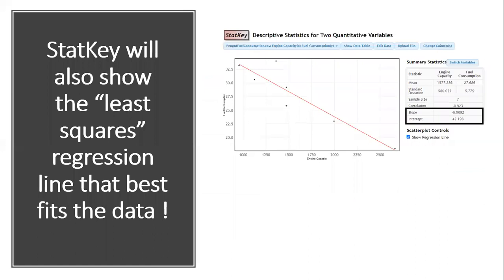Now, StatKey will also, in addition to showing us the correlation that exists between two variables, it will also show us the least squares regression line that best fits the data. Notice that right below the summary statistics, there's a thing called scatter plot controls. And if we check the box marked show regression line, then StatKey will draw in that line that you see on your screen, which we call the least squares regression line.